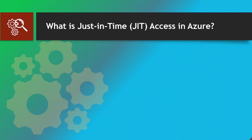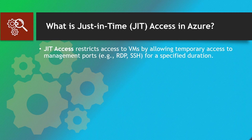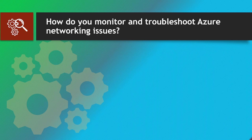What is just-in-time (JIT) access in Azure? JIT access restricts access to VMs by allowing temporary access to management ports (e.g., RDP, SSH) for a specified duration. Benefits: minimizes exposure to potential threats, and logs and audits all access requests.